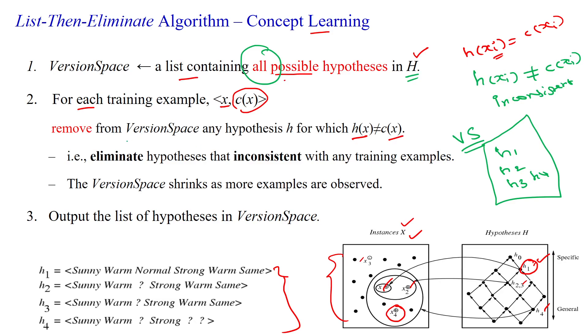Then, if any hypothesis is not satisfying this condition, we will remove that hypothesis from the version space. Like that, we will check all hypotheses with all training examples. When you are removing hypotheses, the number of hypotheses available in the version space is decreasing. That's what is given here: when you are removing inconsistent hypotheses from the version space,